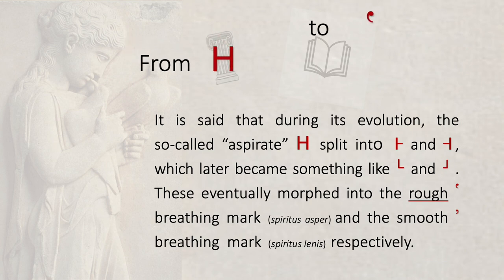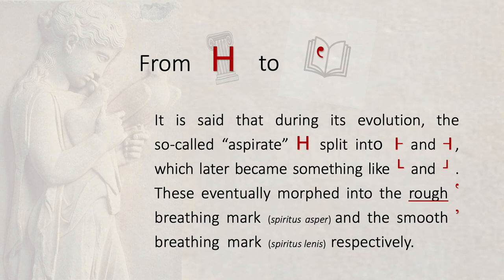It is said that during its evolution, the so-called aspirate split into two parts, which later became something like a raised capital L and a raised inverted capital L. These eventually morphed into the rough breathing mark, which looks like a raised inverted comma, and the smooth breathing mark, respectively.